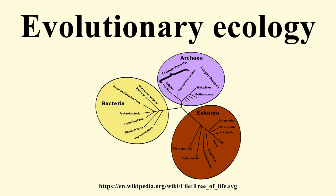Evolutionary ecology lies at the intersection of ecology and evolutionary biology. It approaches the study of ecology in a way that explicitly considers the evolutionary histories of species and the interactions between them. Conversely, it can be seen as an approach to the study of evolution that incorporates an understanding of the interactions between the species under consideration. The main subfields of evolutionary ecology are life history evolution, sociobiology, the evolution of interspecific relations, and the evolution of biodiversity and of communities.